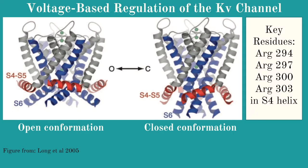In this slide, I've zoomed in on the voltage sensing domain to show the difference in structure between the open and closed conformation. When the electric field changes as a result of the conduction of an action potential, arginine residues 294, 297, 300, and 303 can change orientation and result in the transition from open to closed conformation or vice versa. Because these residues are critical to the KV channel's voltage sensitivity, they are among the most highly conserved residues in the protein.